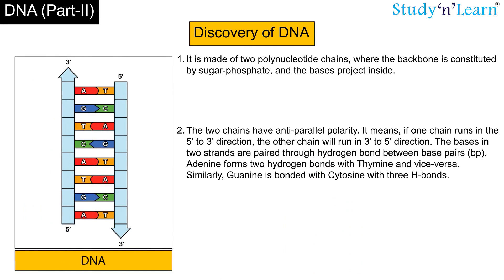Anti-parallel polarity means if one chain runs in the 5' to 3' direction, the other chain will run in the 3' to 5' direction. The bases in the two strands are paired through hydrogen bonds. Adenine forms two hydrogen bonds with thymine and vice versa. Similarly, guanine is bonded with cytosine with three hydrogen bonds.